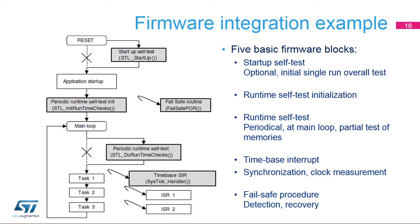Self-test procedures are included as an additional task when initializing the application main loop during system startup. This runtime self-test task provides periodic testing of the CPU, clock system, stack boundary, program flow, and both volatile and non-volatile memories. The watchdog timeout is refreshed upon completion if everything goes correctly. The memory areas are tested step-by-step per parts within the task, synchronized by time-based ticks derived from timer interrupts. The interval required to complete the test depends mainly on the size of the memory areas under test, frequency of the task calls, and sizes of the blocks tested in a single step.